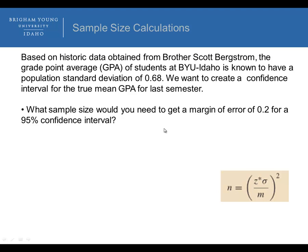What sample size would you need to get a margin of error of 0.2 for a 95% confidence interval? We would take 1.96, because we're doing a 95% confidence interval, that's the critical value...